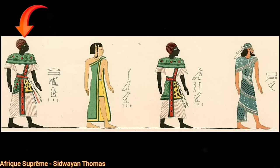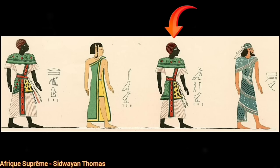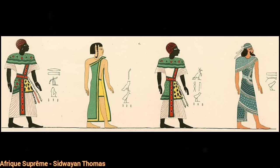Le premier personnage tout à gauche est un kamite, c'est un ancien égyptien. Le deuxième personnage est un namou, c'est-à-dire un nomade ou un asiatique. Le troisième personnage est un nubien, le personnage que les anciens égyptiens vont utiliser pour représenter le reste de l'Afrique. Et le quatrième personnage est une population étrangère à l'Égypte ancienne. Comme vous pouvez le constater, sur cette représentation, il n'existe aucune différence entre l'ancien égyptien représenté tout à gauche et le nubien représenté en troisième position.